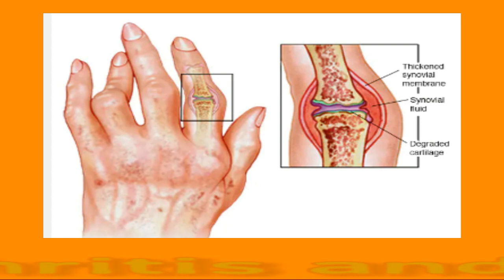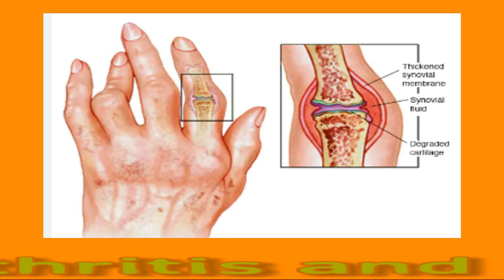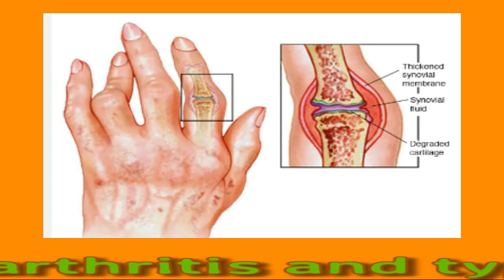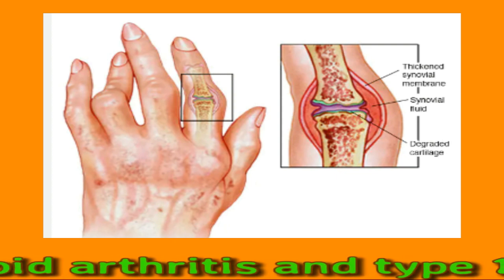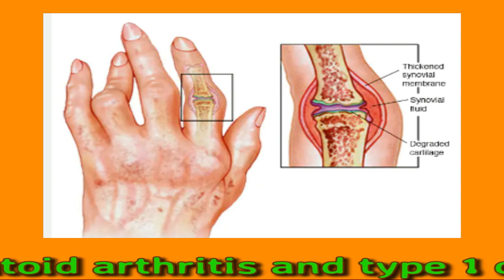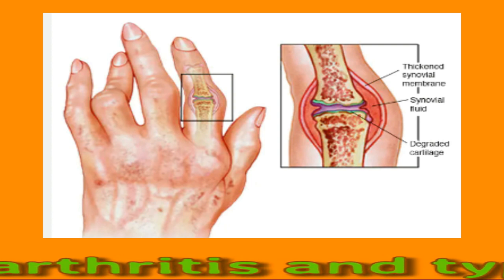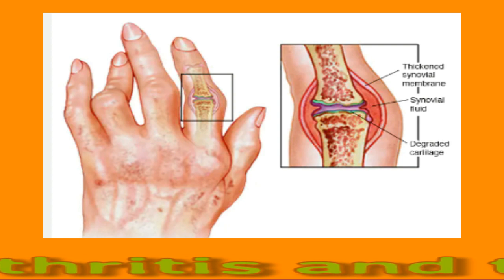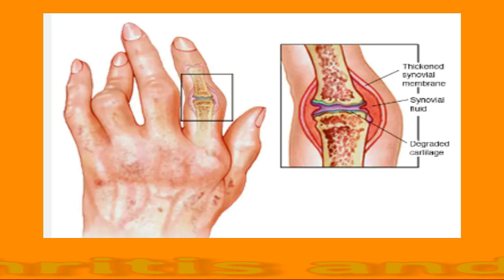Rheumatoid arthritis and type 1 diabetes: Both rheumatoid arthritis and type 1 diabetes are autoimmune disorders, meaning they both cause the immune system to attack an otherwise healthy part of the body. In a person with rheumatoid arthritis, the immune system attacks tissues in the joints causing swelling, pain, and deformities. In an individual with type 1 diabetes, the immune system attacks the pancreas, stopping the production of insulin. Both conditions involve inflammation, and certain clinical signs such as C-reactive protein and interleukin-6 levels are consistently high in people with either condition. Having one autoimmune condition can increase the risk of developing a second, which helps explain why type 1 diabetes and rheumatoid arthritis can coexist.